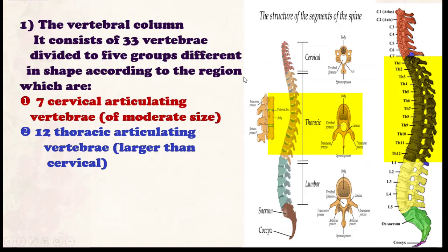Number two: another kind of vertebra starting from vertebra number eight, called the thoracic vertebrae. The number of thoracic vertebrae is 12. Their properties are: they are articulating, and larger than the cervical vertebrae. The thoracic vertebrae exist in the thoracic or chest region, numbered from vertebra 8 through 19.